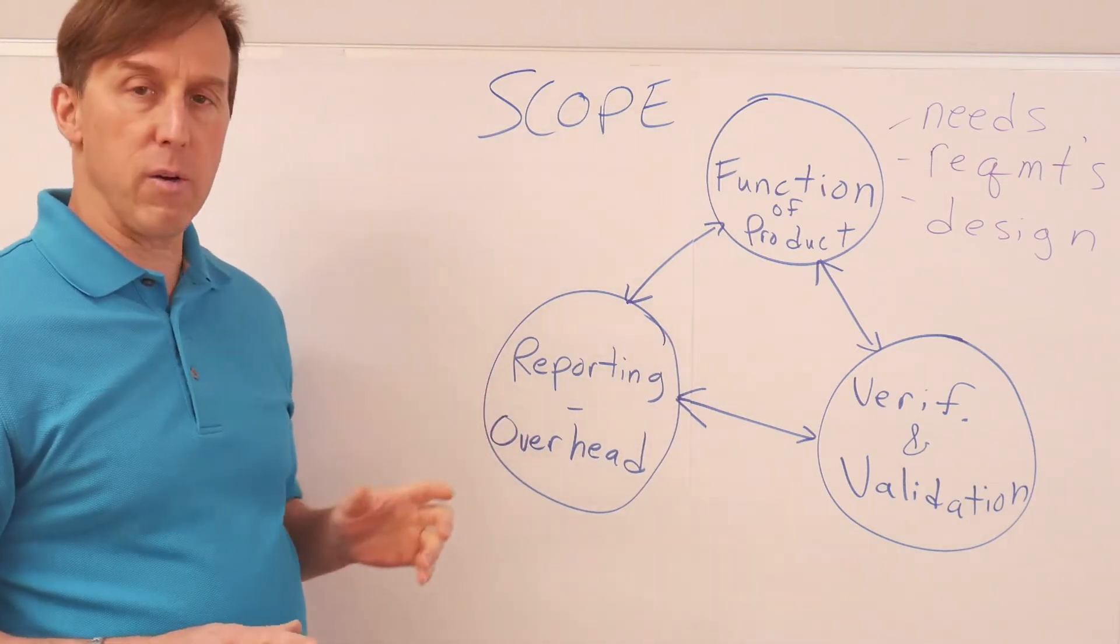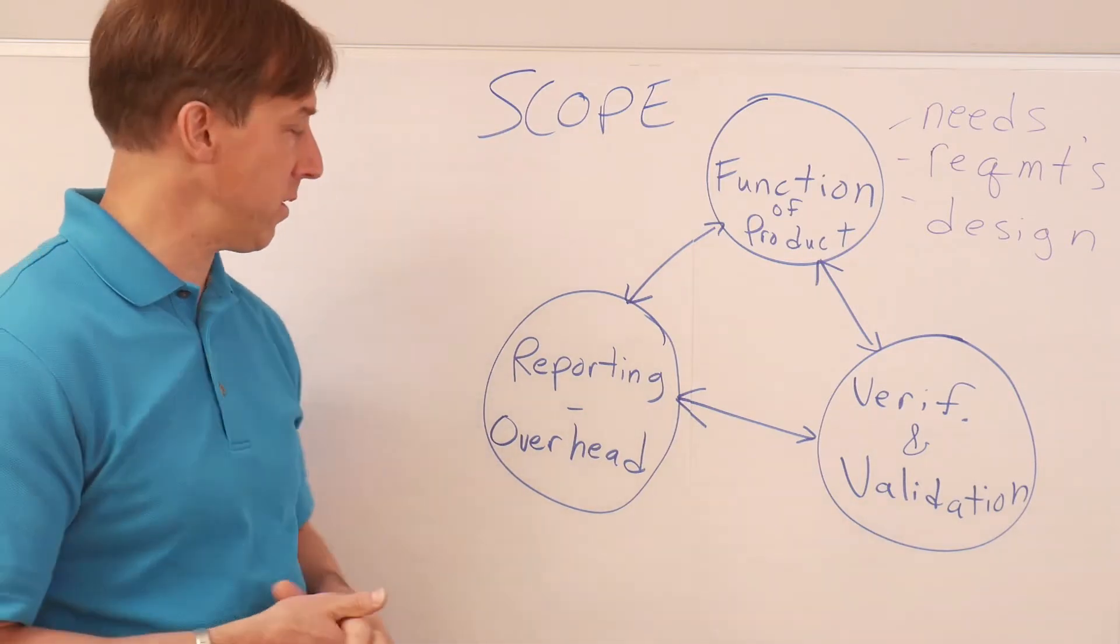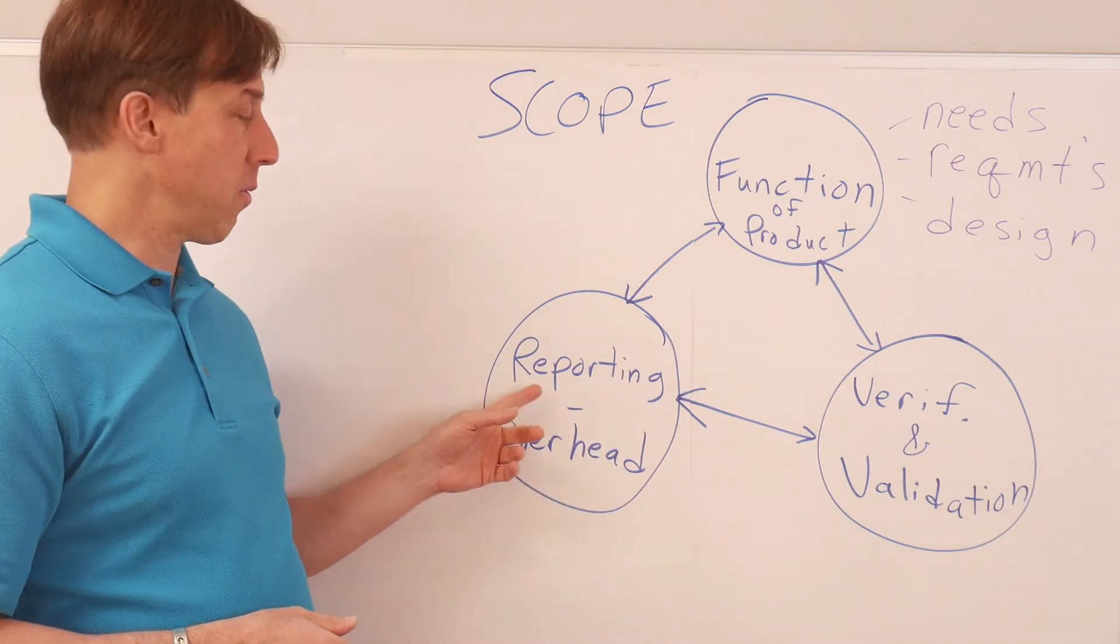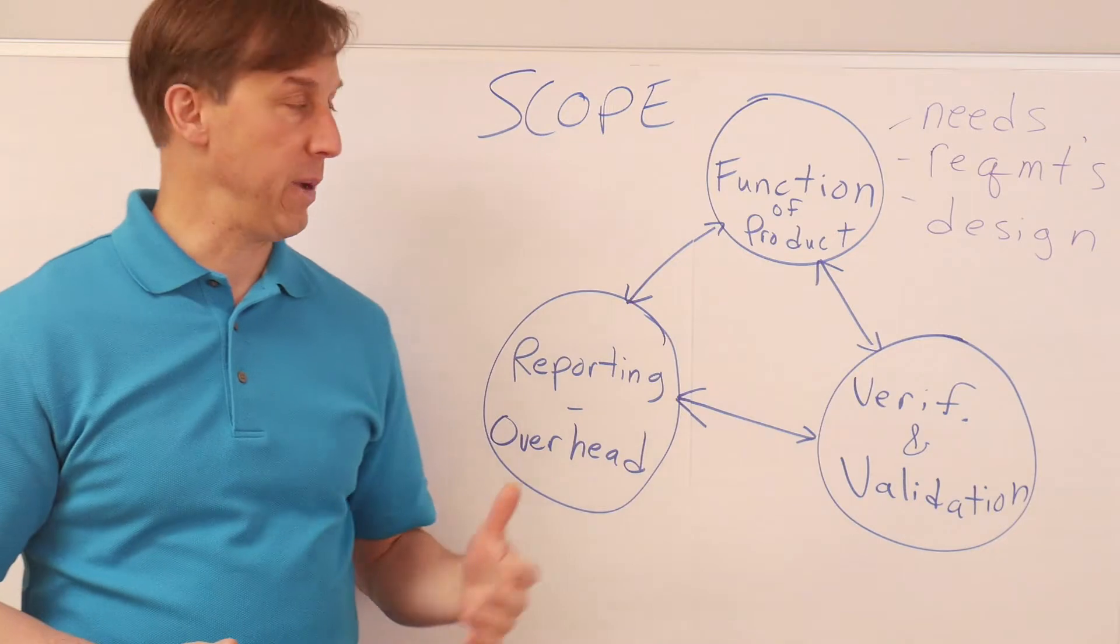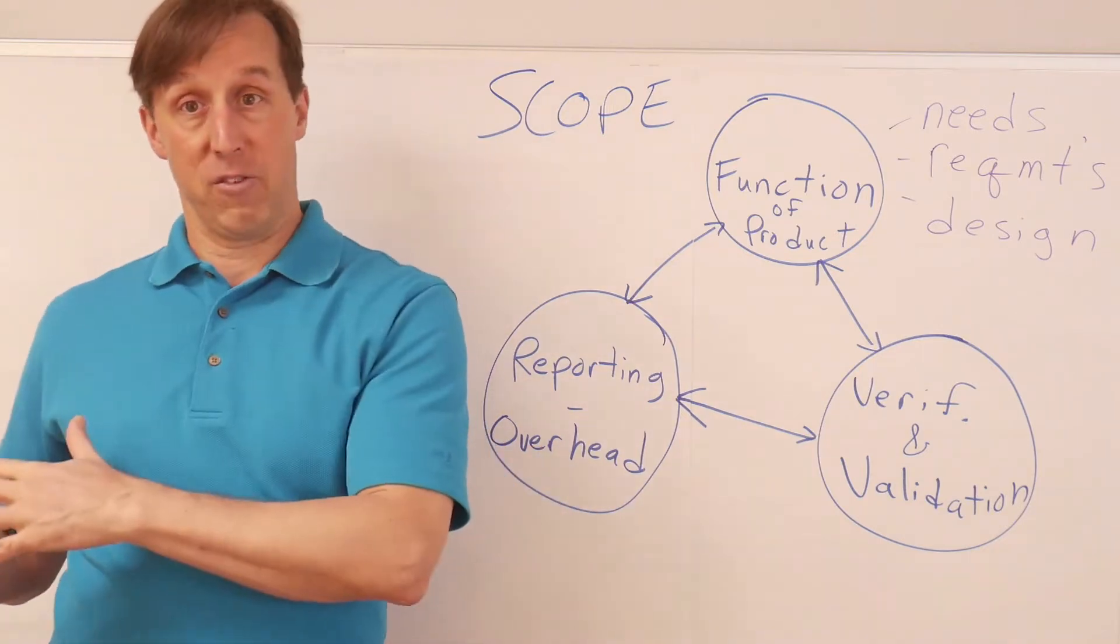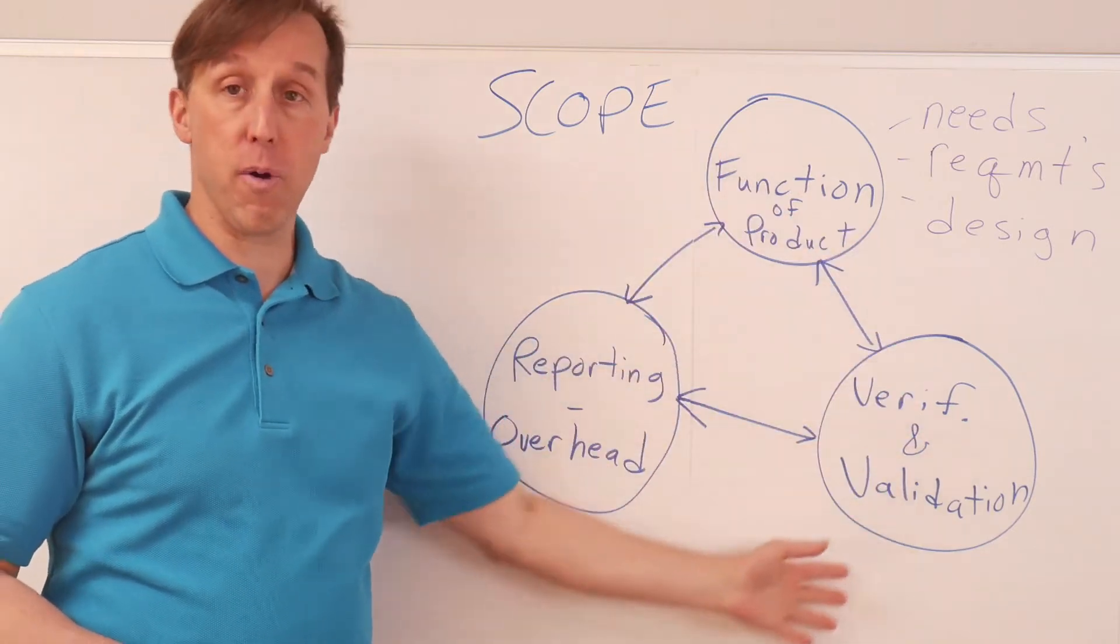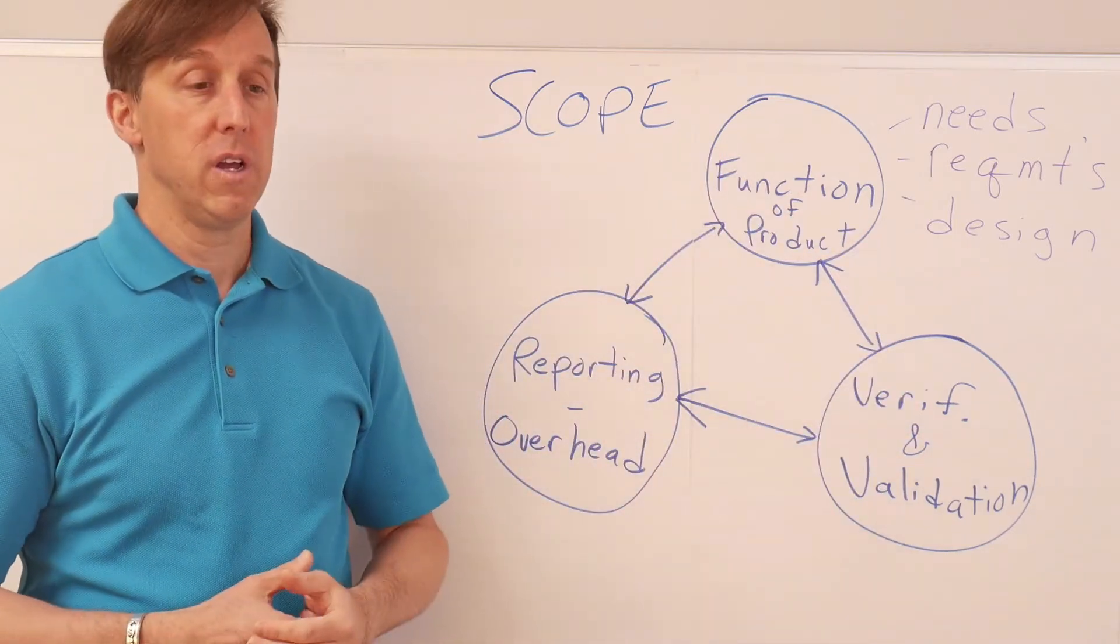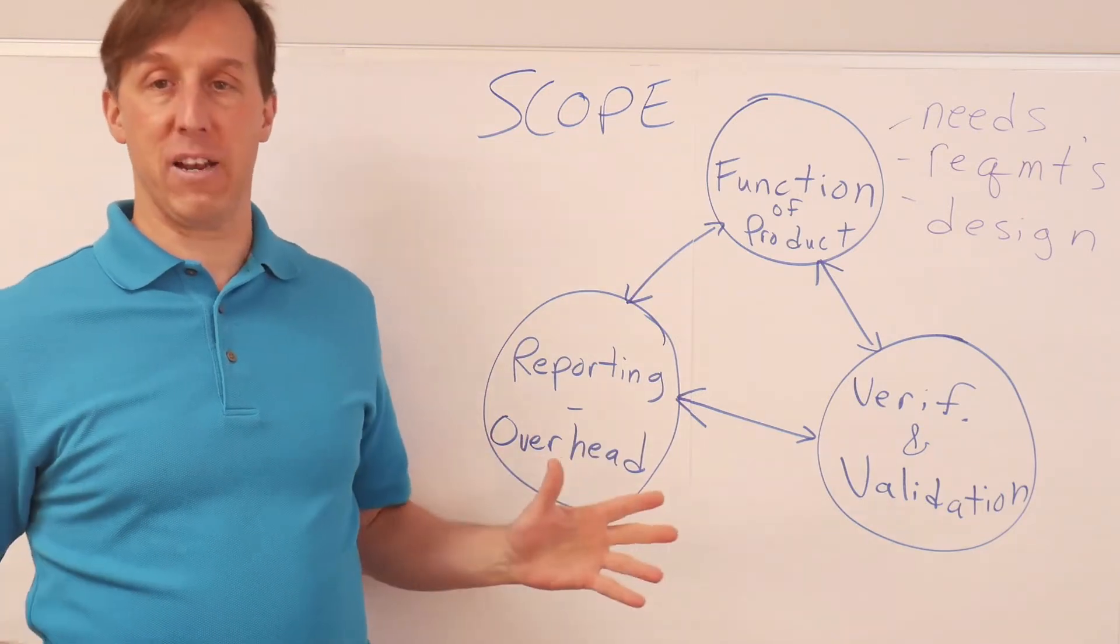The third part, which should not be the biggest part of it, but does need to be included, is reporting and overhead. So reporting, I consider your earned value, your project management. That's different than line management, but perhaps part of your scope, part of your project, needs to account for paying some overhead, and that overhead is what pays line management.